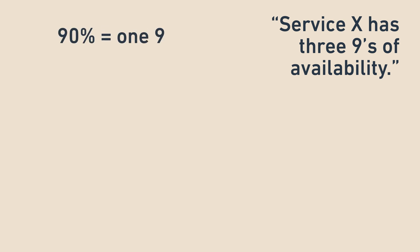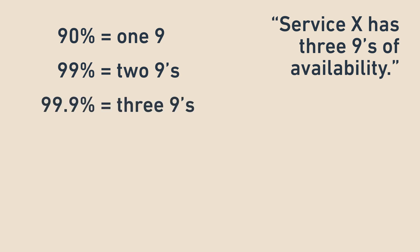People often abbreviate this by stating the number of initial 9s in the number. For example, you could say Service X has three 9s of availability. 90% is one 9, 99% is two 9s, 99.9% is three 9s, etc.